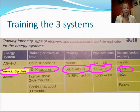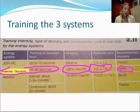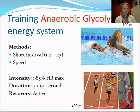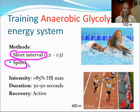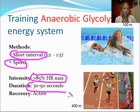With this energy system, we want an active recovery to use our body pump and muscles to increase oxygen delivery and remove waste products — the hydrogen ions — so there is less build-up and we can perform at higher intensities for longer. The training methods are short interval training and speed training, with intensity above 85%, duration of 10 to 90 seconds, and an active recovery.